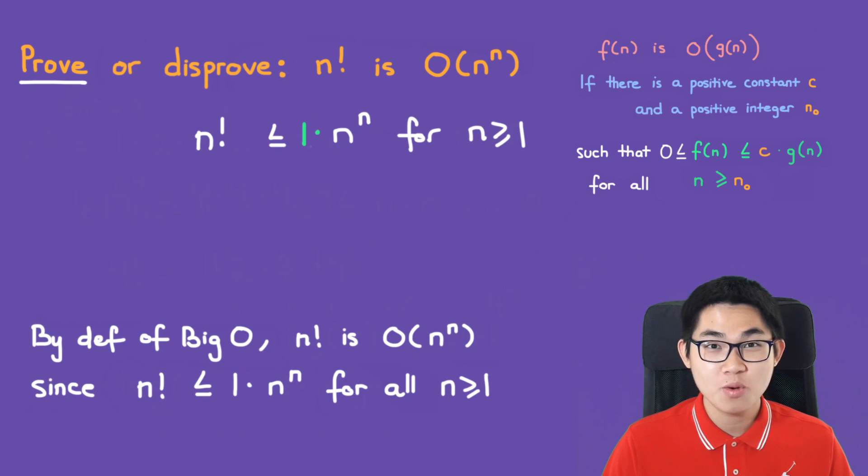We found our c, we found our n naught, and it's time to write the conclusion. By the definition of big O, we prove that n factorial is O of n to the power of n, since n factorial is smaller or equal to 1 times n to the power of n for all n greater or equal to 1.